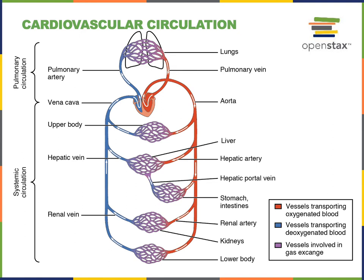Arterioles deliver blood into capillaries, which are the smallest blood vessels. Capillaries have very thin walls and are specialized for exchange — nutrients and waste move out of and into the blood at capillaries throughout the body. Blood then collects from the capillaries into venules, which are the smallest veins, and veins drain blood into the atria of the heart. The largest veins from the systemic circuit are the vena cava, which drain deoxygenated blood into the right atrium, while the pulmonary veins drain oxygen-rich blood from the lungs into the left atrium.